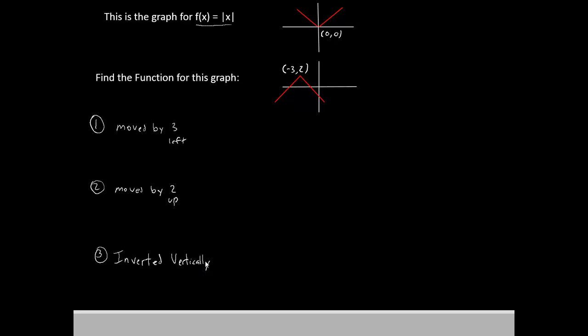So we're going to take all three of those things into account in order to figure out what the correct function is. We're going to start from y equals absolute value of x. The first operation we're going to do is to move it left 3.